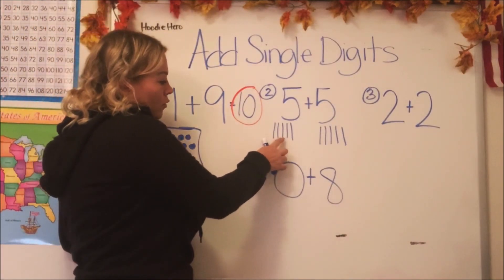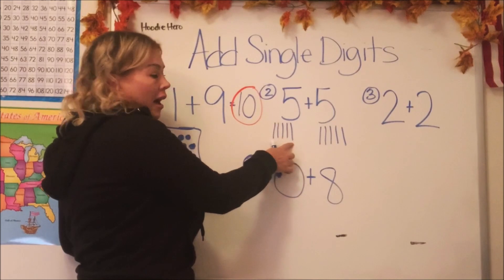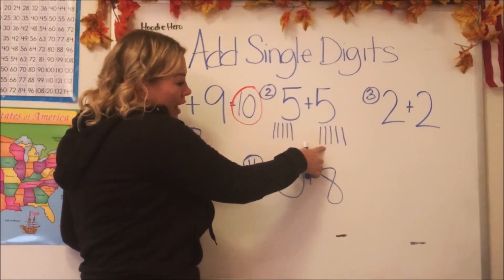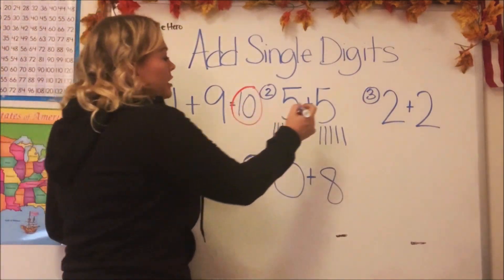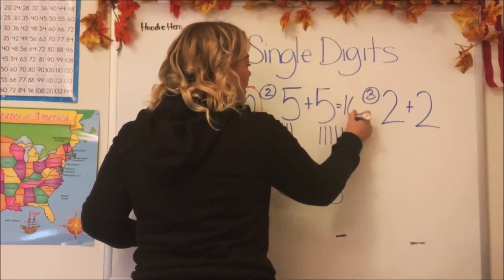Okay, one, two, three, four, five, six, seven, eight, nine, ten. Hey, that answer is ten too. So five plus five is ten.